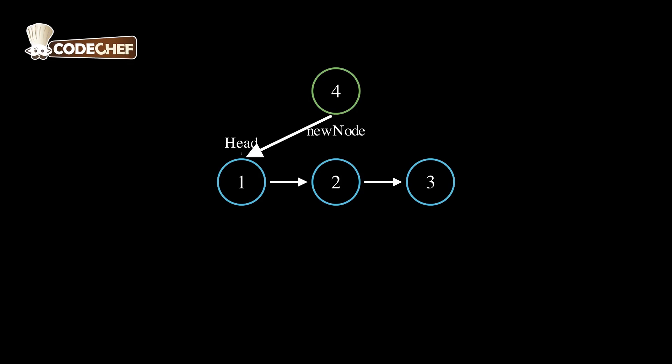Next, we set the next pointer of the new node to point to the current head of the list, which is the node with the value 1.